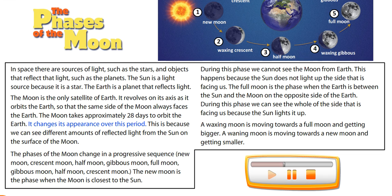It changes its appearance over this period. This is because we can see different amounts of reflected light from the Sun on the surface of the Moon.